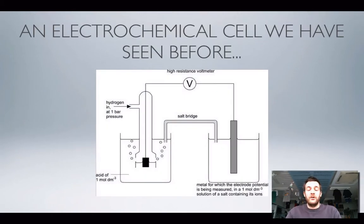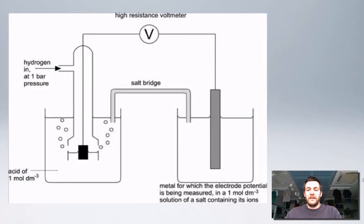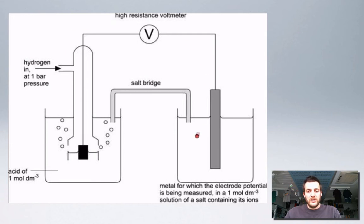You might be thinking you've got no idea what an electrochemical cell is. The chances are you've used thousands of them in your life, and you've actually seen one in this series of films before. When we were talking about standard reduction potentials and how you measure them, we discussed connecting a half cell — perhaps a metal dipped into a solution of metal ions — to a standard hydrogen electrode to measure the difference between the two potentials, and adding a salt bridge to complete the circuit.